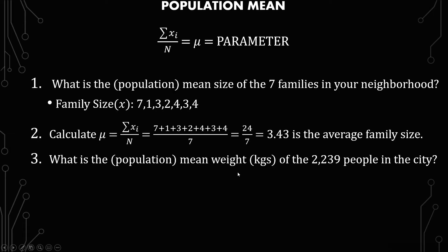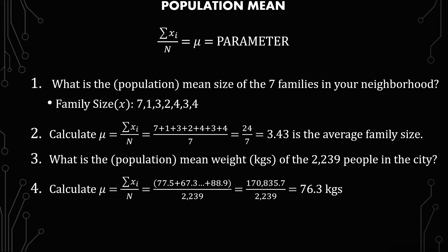The next example is: what is the population mean weight in kilograms of the 2,239 people in the city? It's going to go over the same process. I don't have a list of all 2,239 people because I can't show all those numbers — that would be a data overload. So this is how it would look in terms of how you write it, just for simplicity's sake.